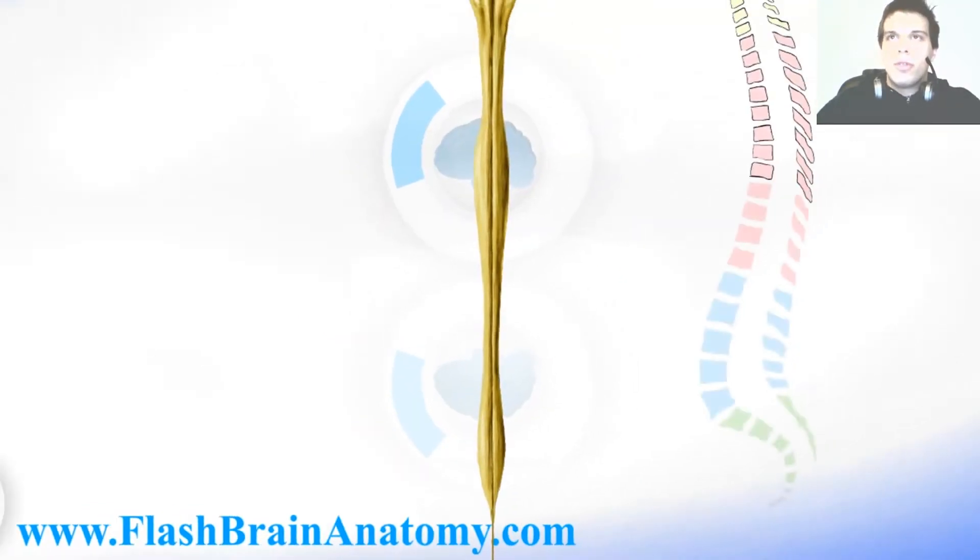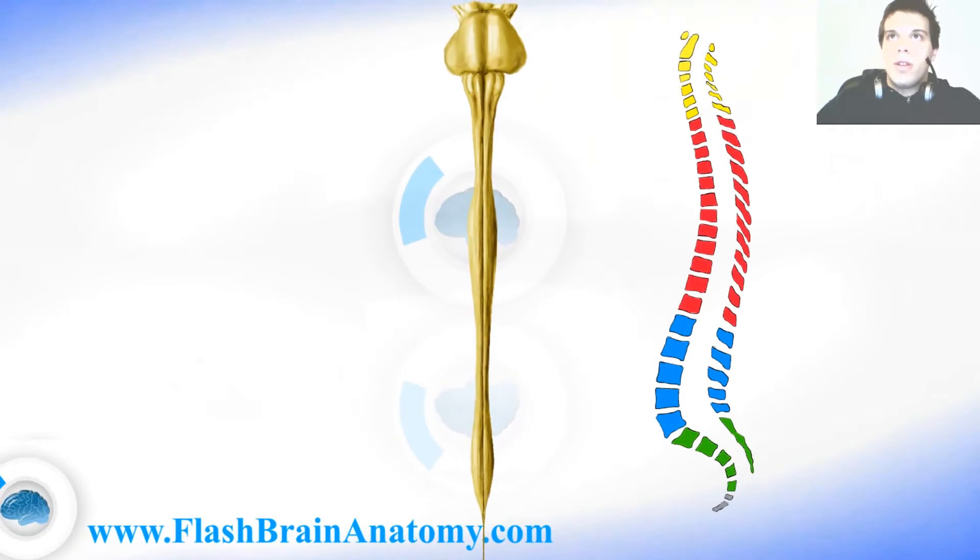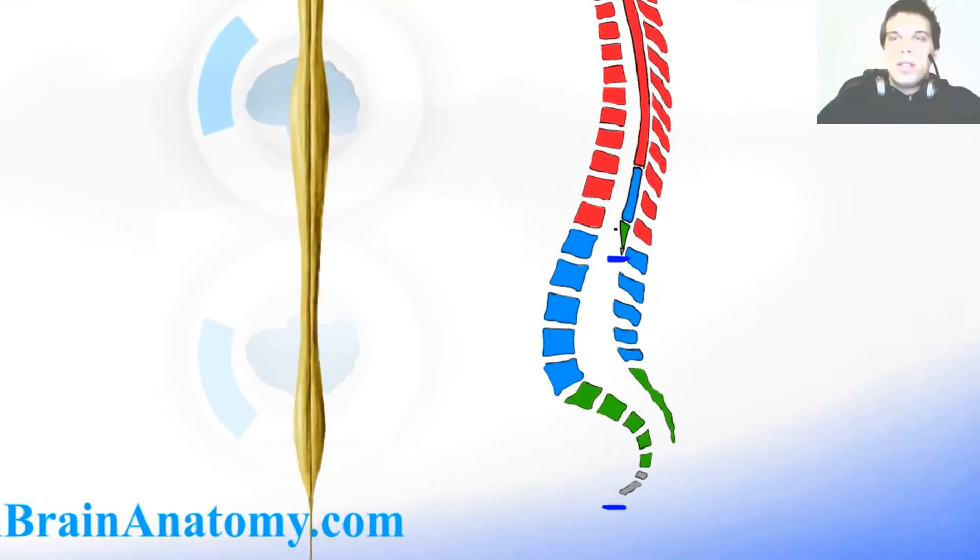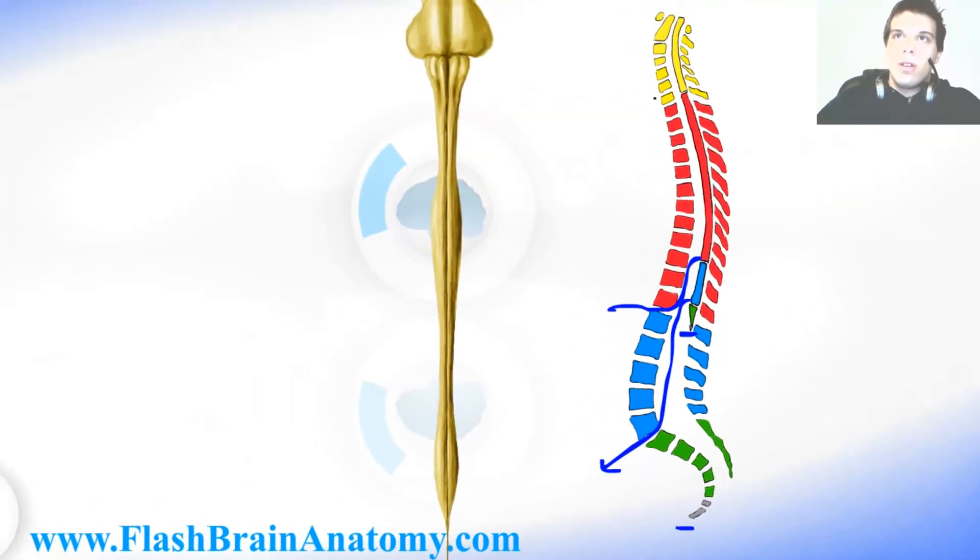Now I will illustrate the vertebral column and the spinal cord inside of it. As you can see, the spinal cord is shorter than the vertebral column. Because of that we have the last lumbar spinal nerve leaving here, leaving the spinal cord and leaving the vertebral column here. Same over here and over here.